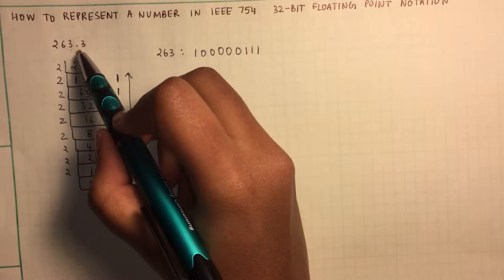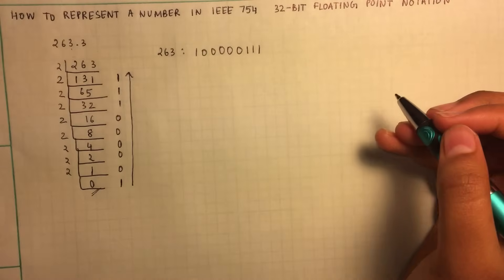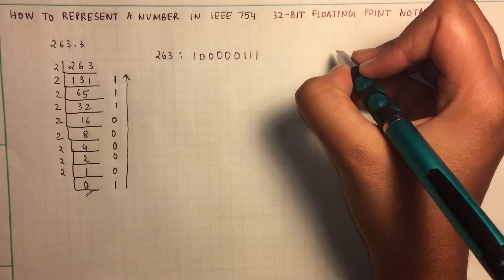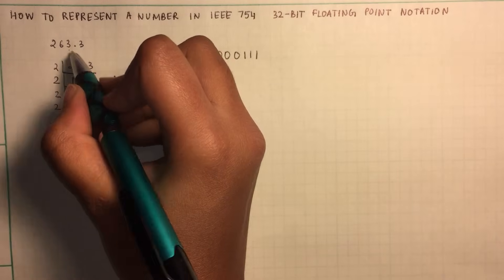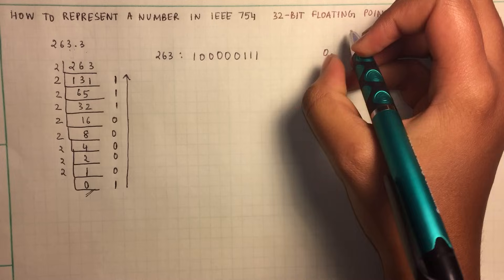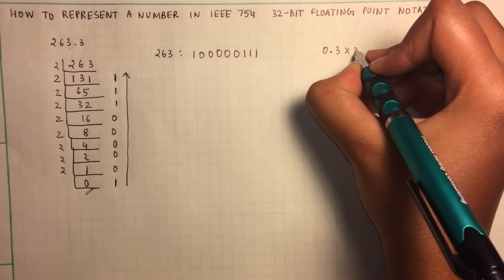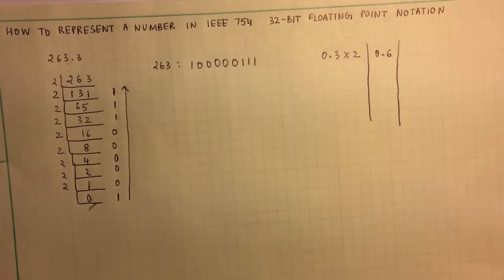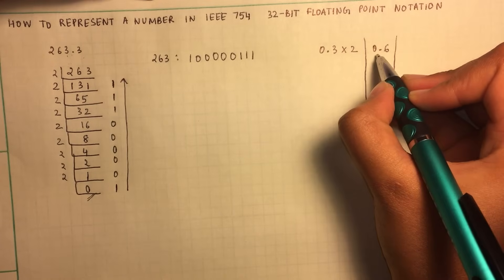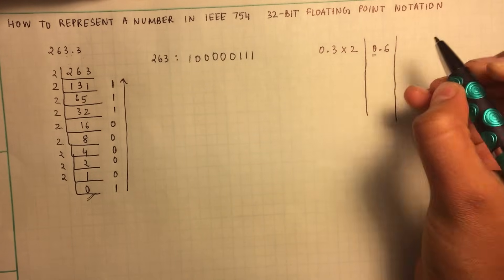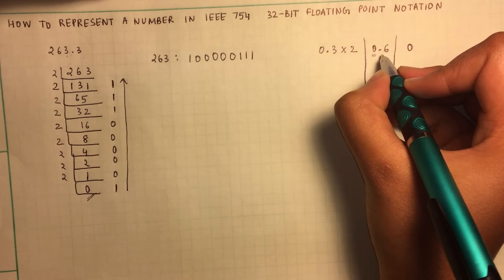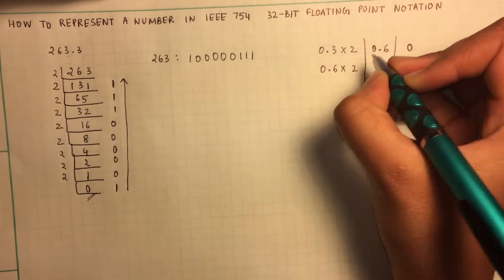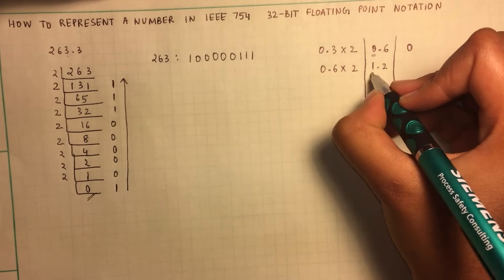Now we have to convert 0.3 to binary representation, which entails a different procedure. You start multiplying the digit after the decimal point by 2. So 0.3 times 2 gives 0.6. You keep track of the digit that precedes the decimal point — in this case it's 0. Then 0.6 times 2 gives 1.2; keep track of the 1.